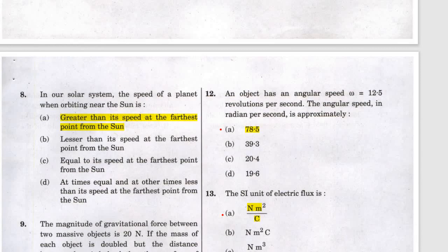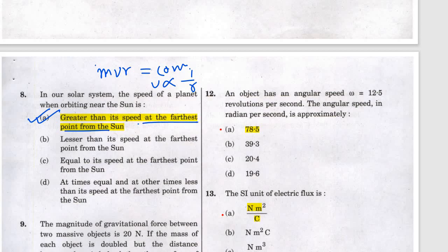Question eight — Kepler's second law: the speed of the planet. Angular momentum is conserved, so mv·r equals constant, meaning v is proportional to one over r. As distance increases, speed decreases. The farthest point has the minimum speed, and at any other point the speed will always be greater than the speed at the farthest point from the sun.